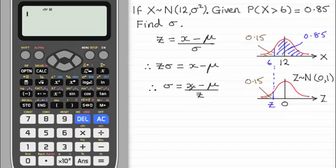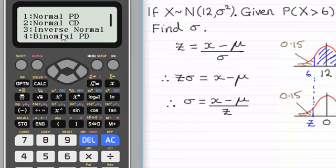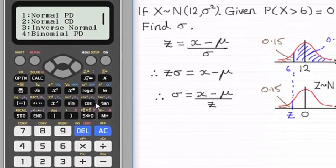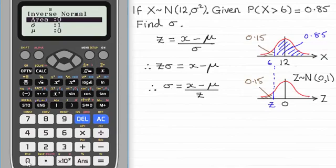So using the calculator if you've seen the previous videos just select the menu. Option 7 takes us to the probability distributions. Option 3 the inverse normal so I'll press 3 there. And the area represents the probability of being to the left of z. The cumulative probability as I showed you in an earlier video. It's now 0.15 so we'll just enter 0.15.